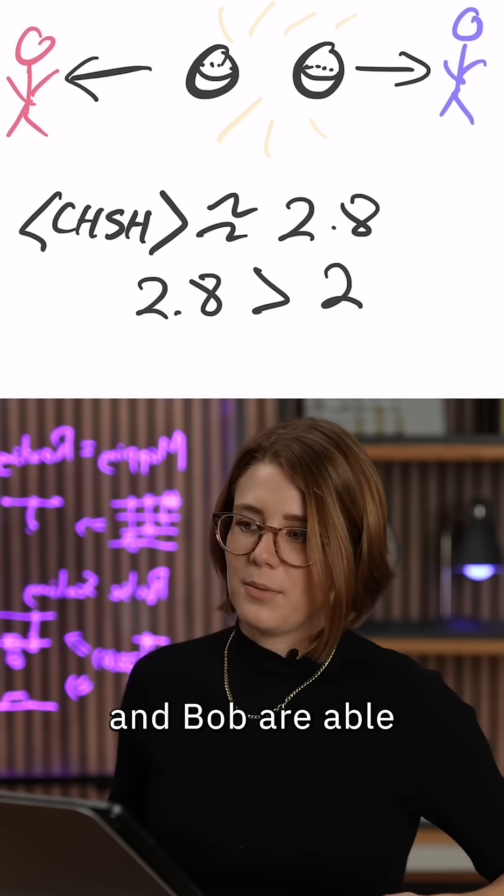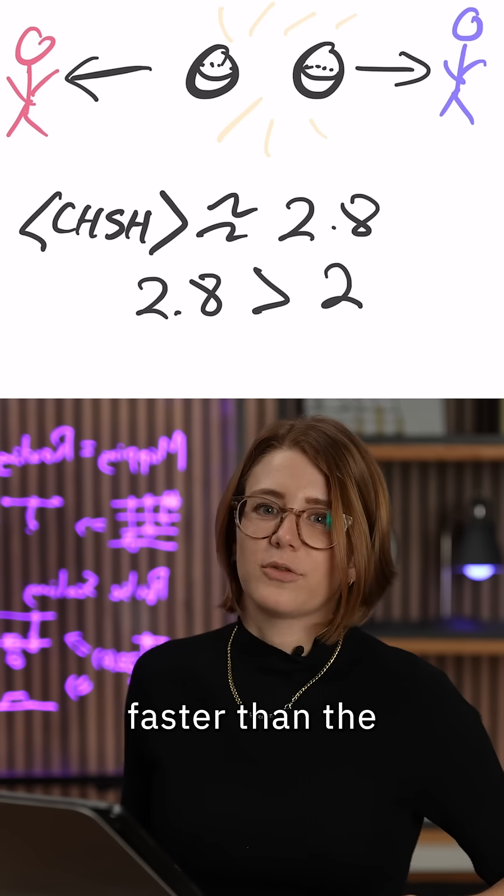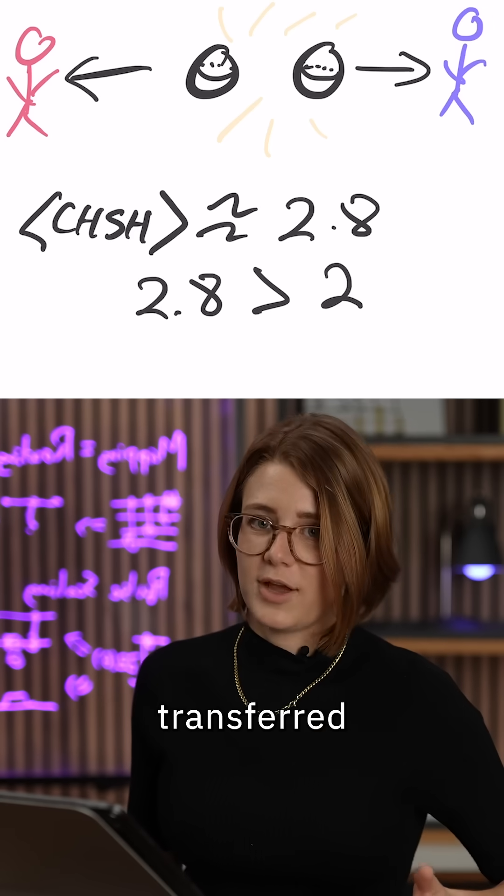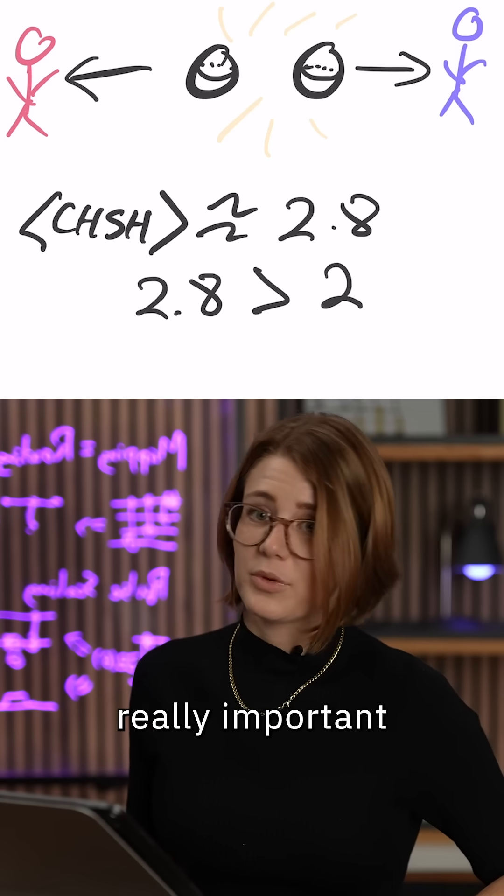But that does not mean that Alice and Bob are able to communicate with each other faster than the speed of light. No information is being transferred at that speed. So that's really important to know.